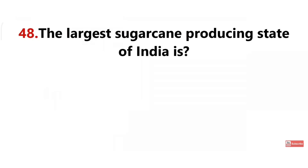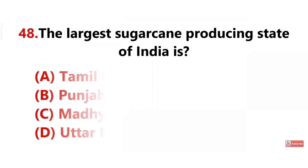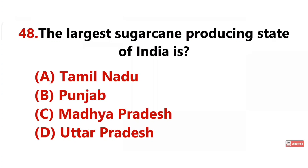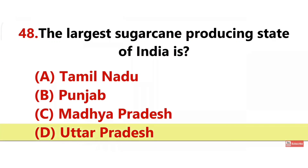The largest sugarcane producing state of India is Answer Option D: Uttar Pradesh.